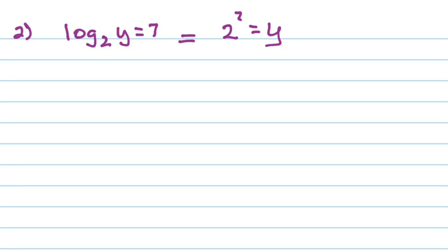So all we have to do in this case is find out what 2 to the 7th would be. So 2 to the 7th, 2 times 2 is 4, times another 2 is 8, times another 2 is 16, times another 2 is 32, times another 2 is 64, times another 2 is 128. So that gives us 128 equals y, and the equation is solved.